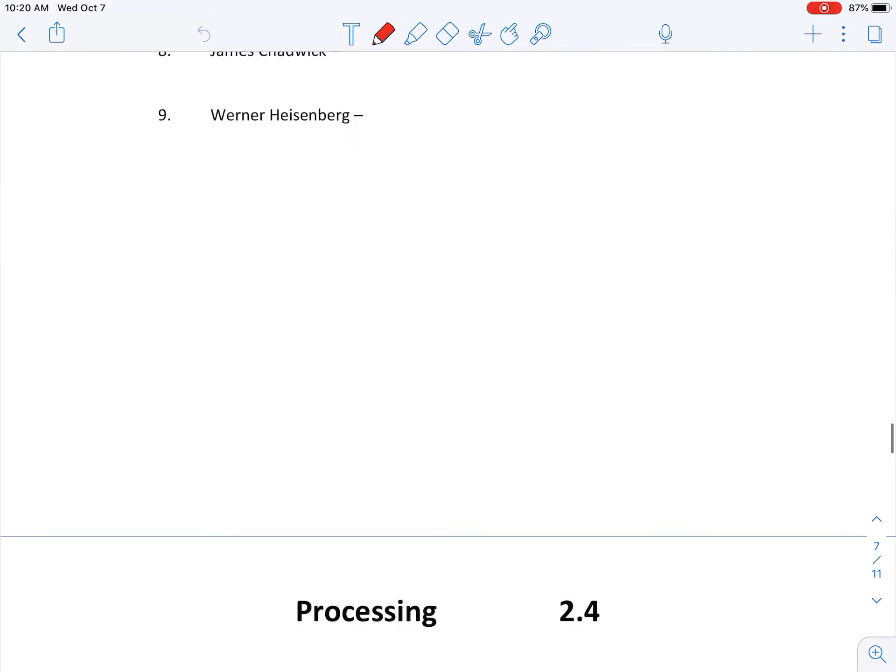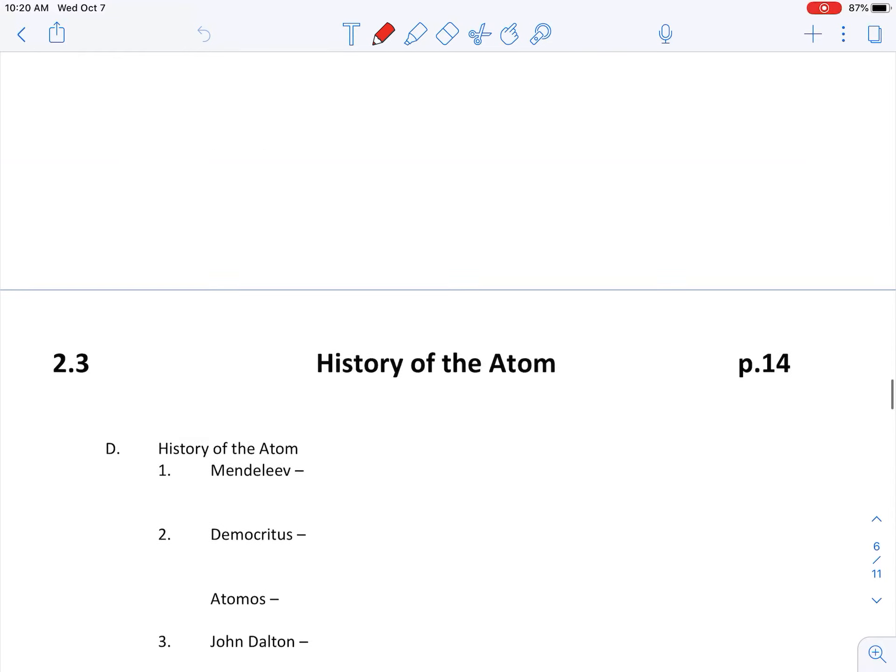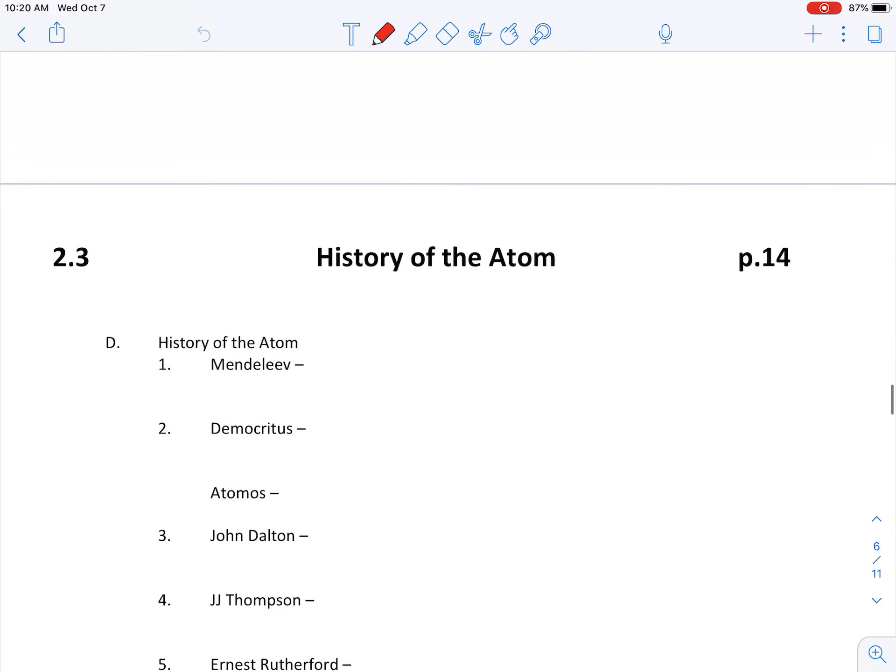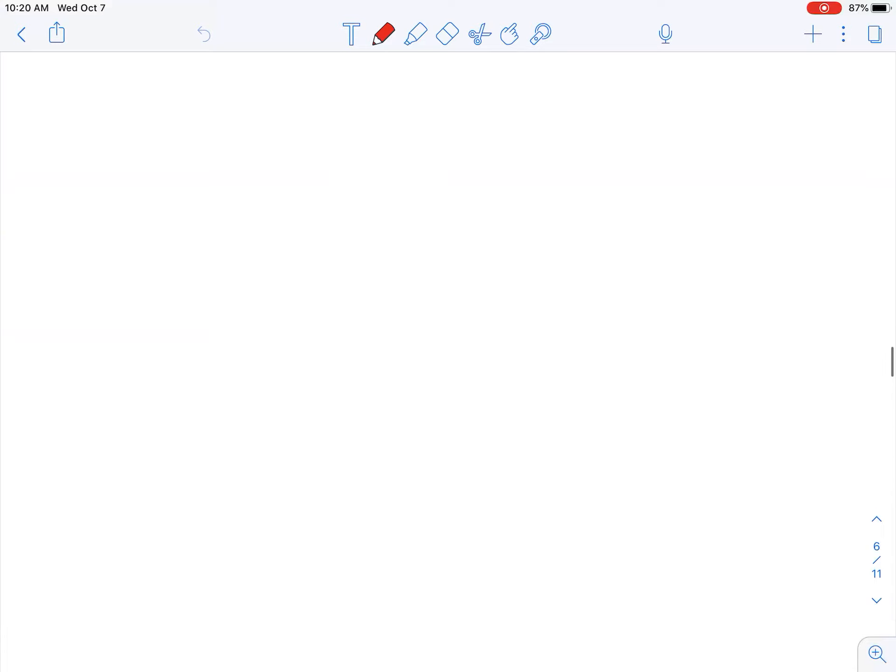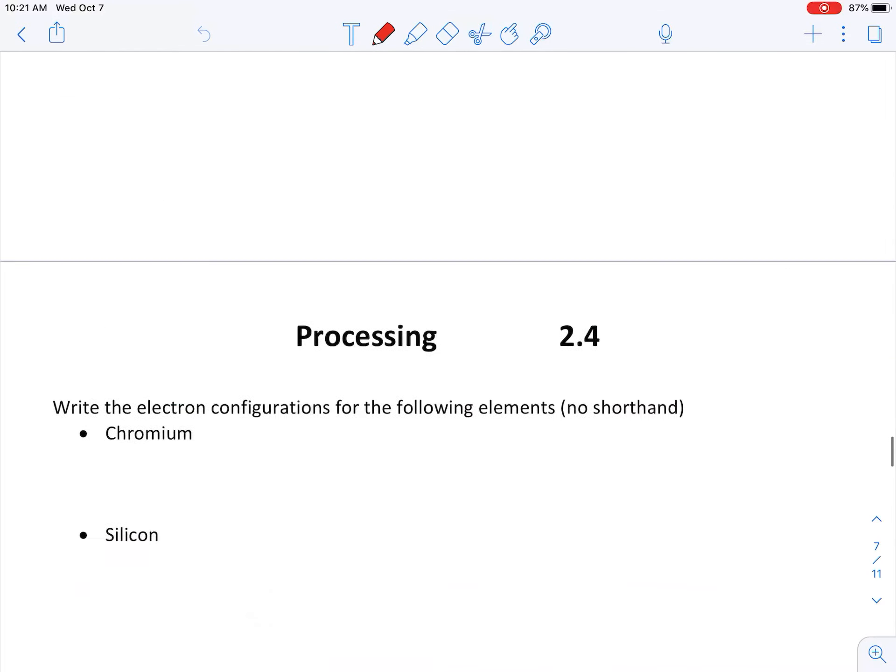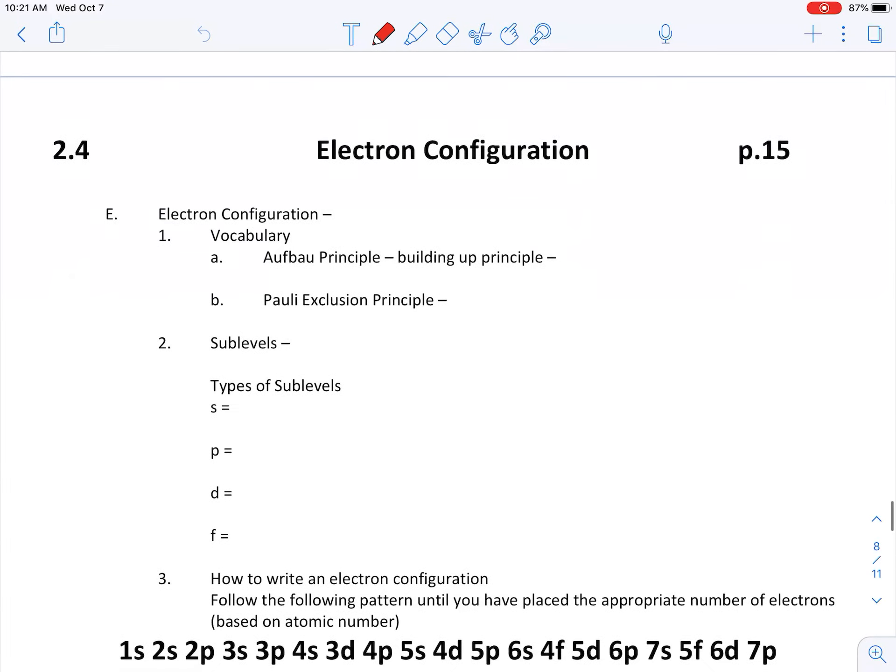Our processing from last week should be over 2.3, which is the history of the atom. Our processing question is: which scientist was the first to use the term atomos, which means indivisible? Go ahead and hit pause while you answer this question. Remember, you can refer to the notes on the right-hand side, and then I'll meet you at the new notes, which is electron configurations, in just a second.